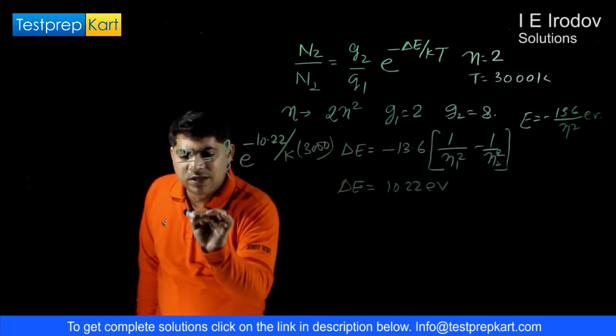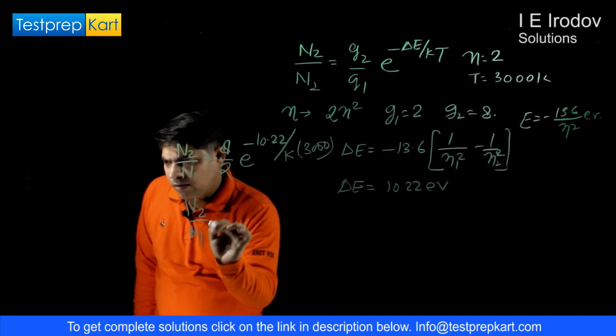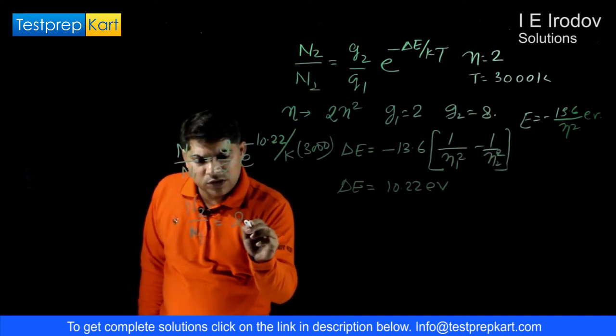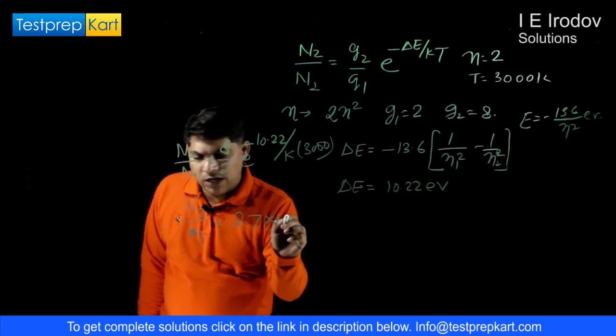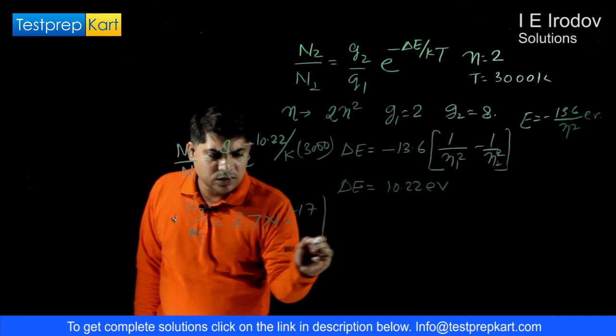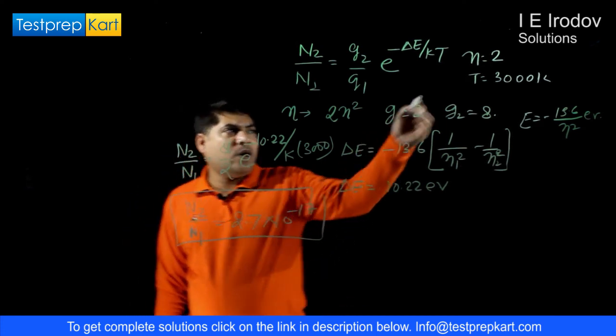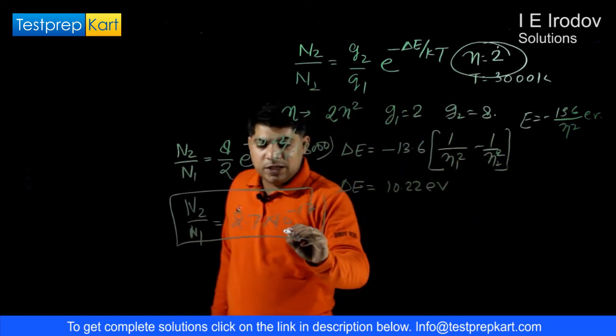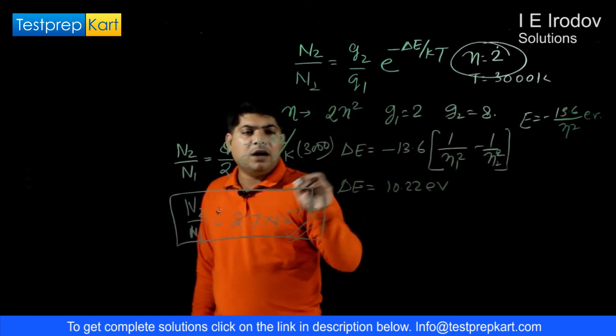By solving this we will get the ratio n2 over n1 which equals 2.7 times 10 to the power minus 17. So at this quantum level n equals 2, it will be the fraction of hydrogen that will be available.